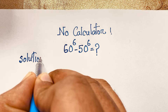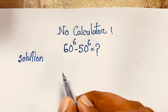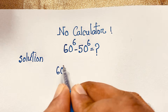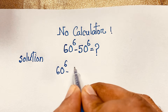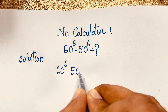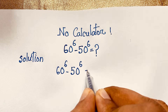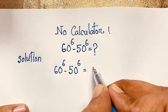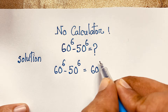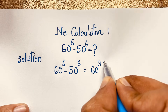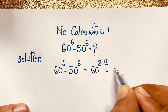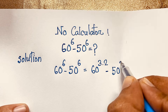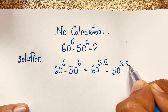Our question is 60 power 6 minus 50 power 6. Now at this moment, you can rewrite the exponent: 60 power 6 — the exponent 6 will be 3 times 2. Likewise, 50 power 6 — the exponent 6 will be 3 times 2, since 3 times 2 equals 6.